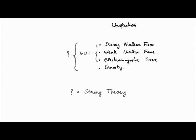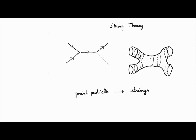So what is string theory? String theory is a physical model where instead of having particles, which are just points, you imagine the basic components of nature to be little strings — objects that are one-dimensional, like little ropes in the world that oscillate. Different modes of oscillation correspond to different particles, a bit like a violin: depending on the tension and the proper modes, you have different notes. This is how strings get differentiated into different particles.